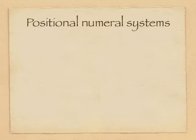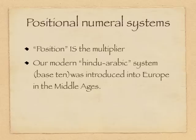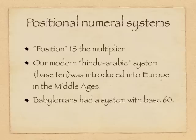But the modern system is a positional numeral system. In this case, like the multiplicative system, you have a multiplier, but it is position. It's important where the number is. Our modern Hindu-Arabic system, base ten, was introduced into Europe in the Middle Ages.